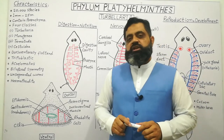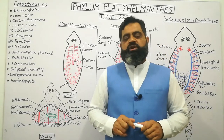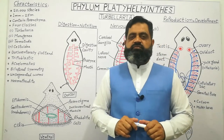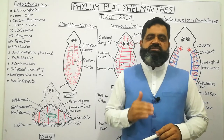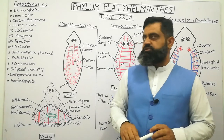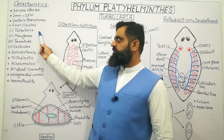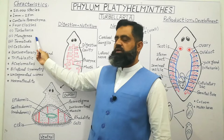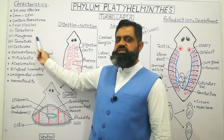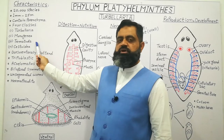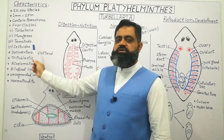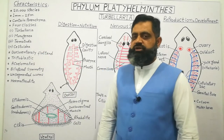This phylum contains four classes which we are going to discuss in separate lectures. The first class is Turbellaria, the second class is Monogenea, the third class is Trematoda, and the fourth class is Cestoda.